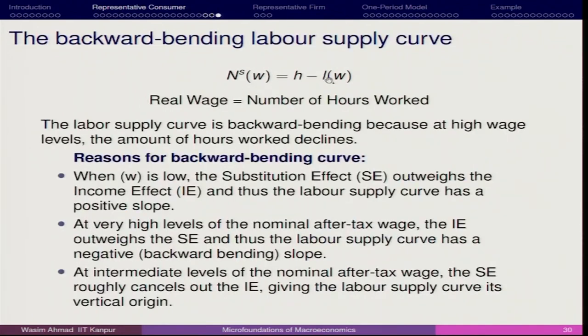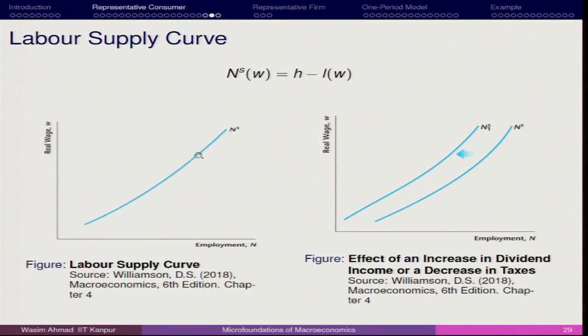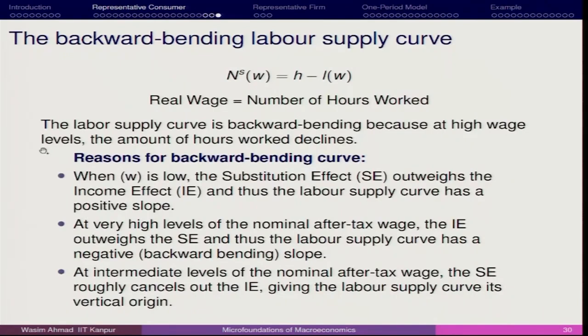H minus L represents the total number of hours worked. This may look like a straightforward case with a positive trend — an upward sloping supply curve — but after a certain point you may have backward bending. The labor supply curve is backward bending because at high wage levels the amount of hours worked declines. In many countries the number of working days per week is getting lower — now you work only four or five days.